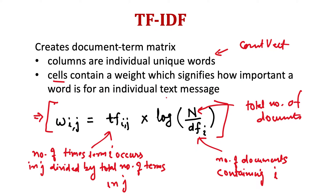This weight signifies how important a word is for an individual text message or document. It depends on two things: tf_ij, which is the number of times term i occurs in document j divided by the total number of terms in j. So if a sentence contains five words and a word occurs two times, it will be 2 divided by 5. Then we have that multiplied by log of N, where capital N is the total number of documents in the corpus, and df_i is the number of documents containing term i.